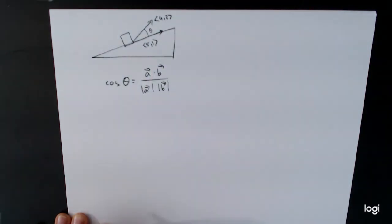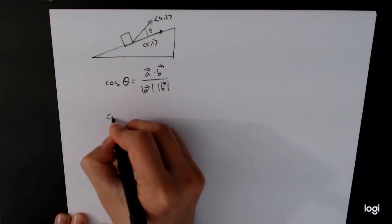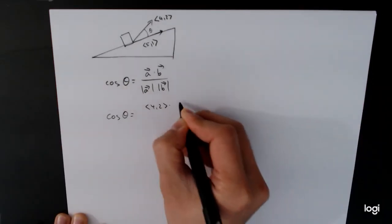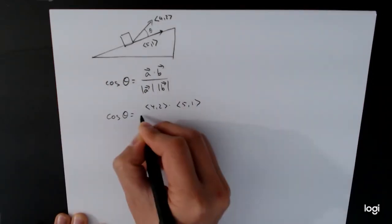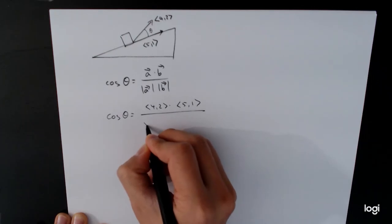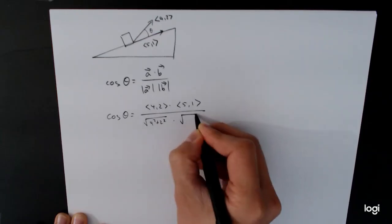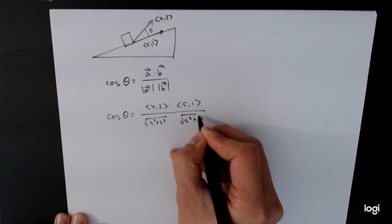Alright, so we have two vectors and we're trying to find the angle between them. This is our formula. Cosine theta is equal to 4-2 dot 5-1 divided by the square root of 4-squared plus 2-squared times the square root of 5-squared plus 1-squared.